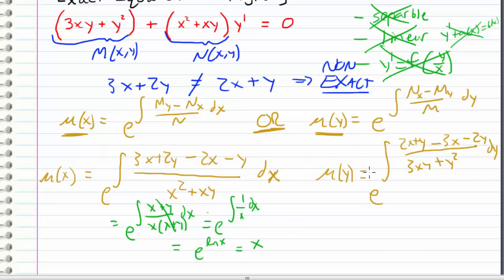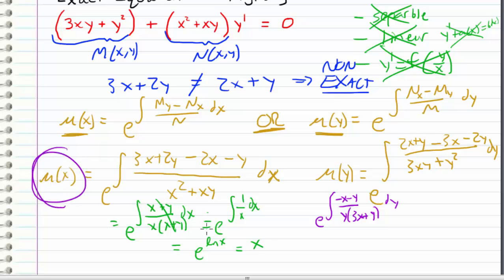Now let's take a look at mu of y to see if it comes out any simpler. The numerator reduces to negative x minus y, and the denominator reduces to — I can factor out a y — and I get 3x plus y dy. We can see that this doesn't really simplify as nicely as mu of x does. So we're going to choose mu of x as our integrating factor because it just comes out to be x, nice and easy. This integral for mu of y would actually require a bit more work, so we won't bother with that.